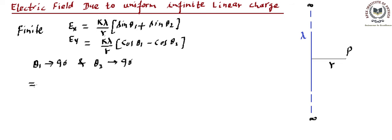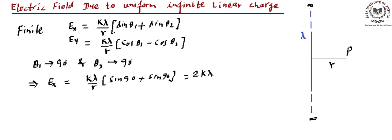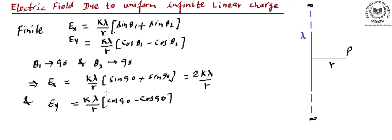Substituting theta 1 and theta 2 into the components, the Ex component — perpendicular to the linear charge — becomes k lambda upon r times (sin 90° plus sin 90°). Since sin 90° is 1, we get 1 plus 1 equals 2, so Ex becomes 2k lambda divided by r. For the Ey component, we get k lambda upon r times (cos 90° minus cos 90°), which is 0 minus 0 equals 0. So the parallel component is 0 and the perpendicular component is 2k lambda by r.